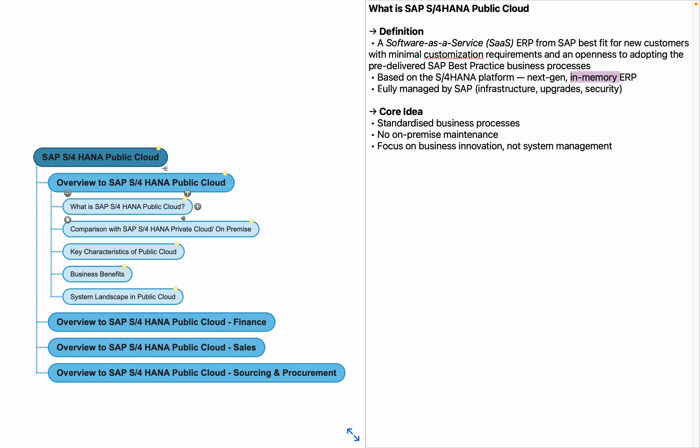Most importantly, SAP S4HANA public cloud is fully managed by SAP — infrastructure, upgrades, security — everything is handled by SAP. Regarding upgrades: in SAP S4HANA on-premise there are different versions, starting from 1511, then 1610, then 1709, and the latest one launched recently was 2025.